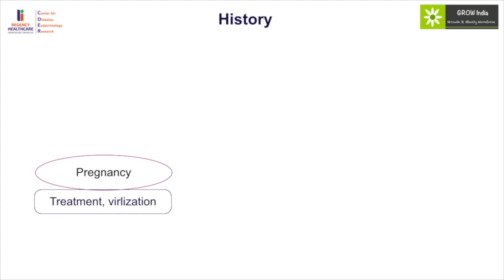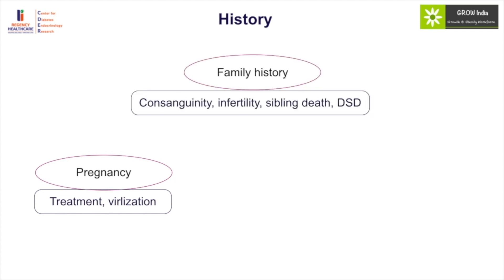Family history will give us clues of consanguinity. Infertility particularly in maternal aunts may be an indicator of X-linked complete androgen insensitivity syndrome, as those maternal ancestors were unable to have male development. History of sibling death and DSD is important particularly for 21-hydroxylase deficiency, and salt wasting will indicate 21-hydroxylase and other forms of congenital adrenal hyperplasia.